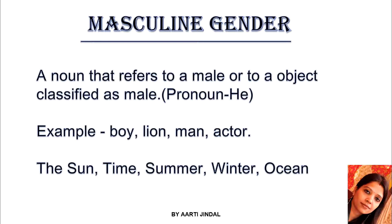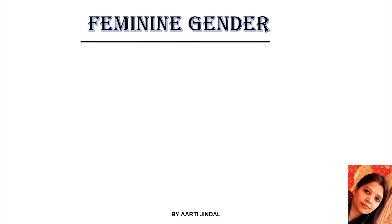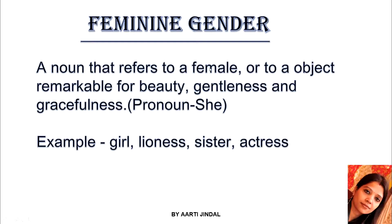Now let us move further to the second type of gender, that is feminine gender, which we call sri-ling in Hindi. A noun that refers to a female, or to an object remarkable for beauty, gentleness, and gracefulness, is feminine gender, and we use the pronoun 'she' for it. Whatever noun refers to a female living being will come under feminine gender. Examples are: girl, lioness, sister, actress — these are nouns that refer to a female.